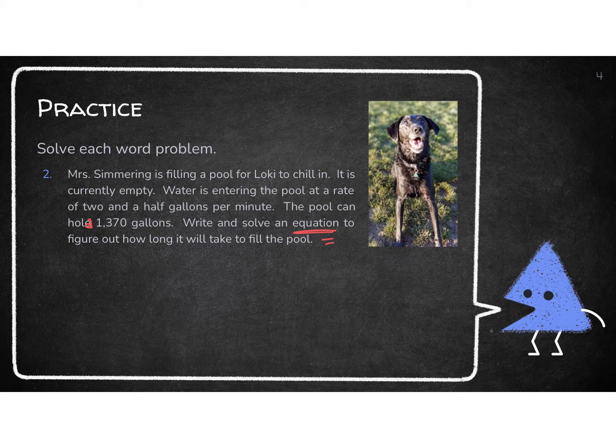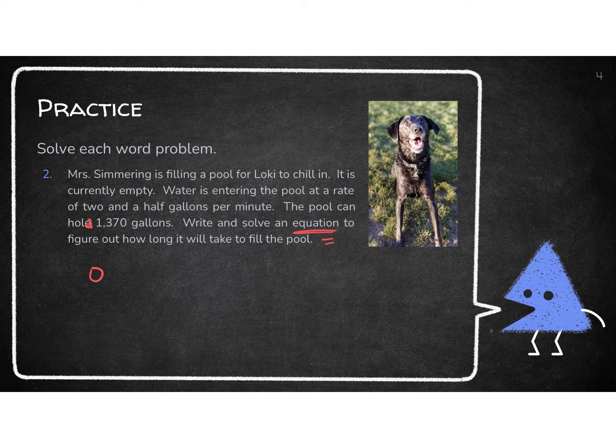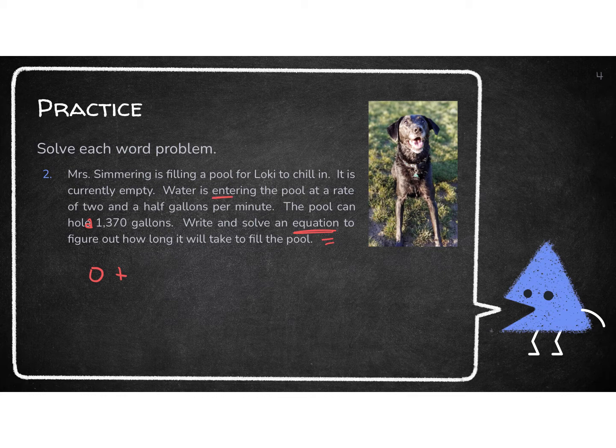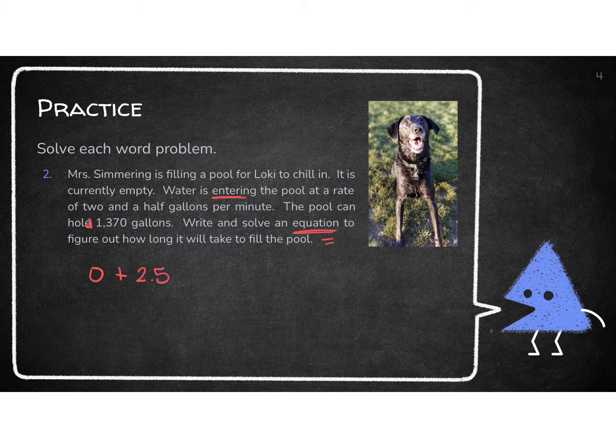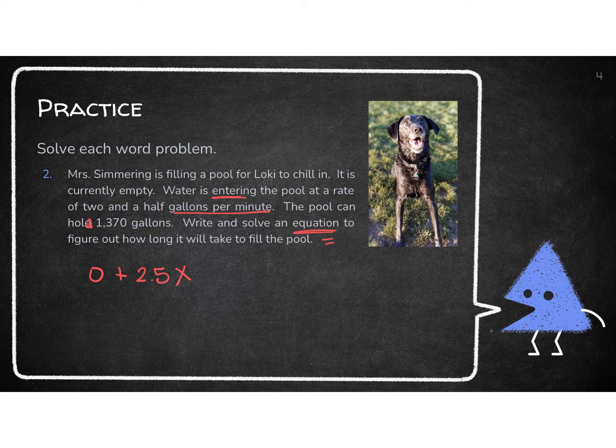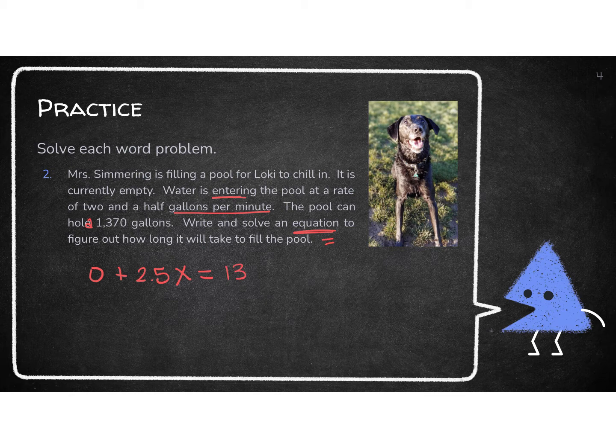Well, I'm starting with it being empty. So I have zero, zero gallons in that pool. I'm going to add, because it says water is entering. So that's mean I'm getting more water at a rate of two and a half. So 2.5, this gallons per minute, that per tells me I get that X. That's the thing that's changing. And I want to equal 1,370 gallons.